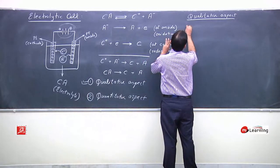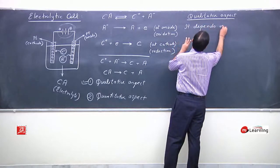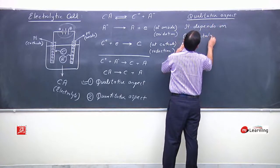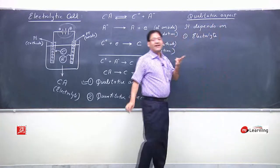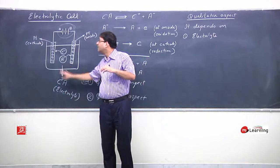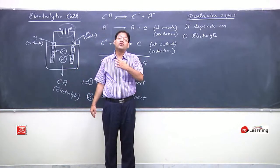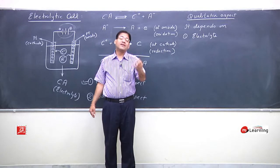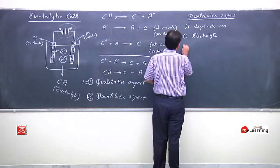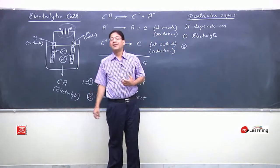The qualitative reaction in the electrolytic cell depends on three factors. The first factor is the electrolyte used in the electrolytic cell — whether it is NaCl, Na₂SO₄, Na₂CO₃, ZnSO₄, CuSO₄, CaCl₂, or others. With different electrolytes, different types of chemical reactions will occur.